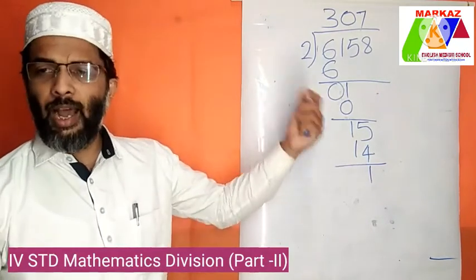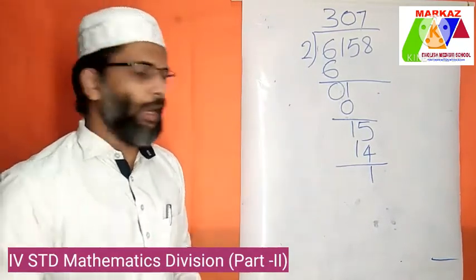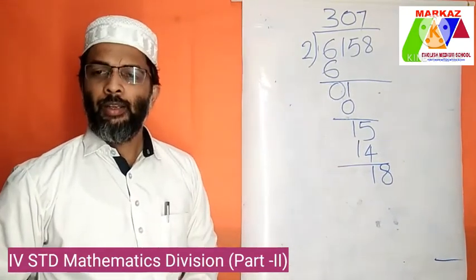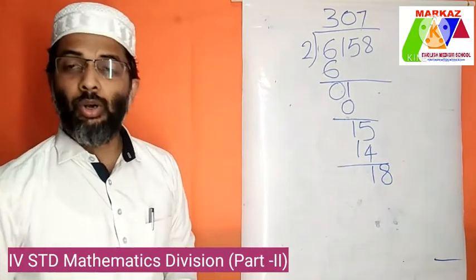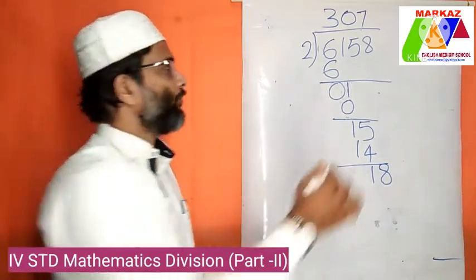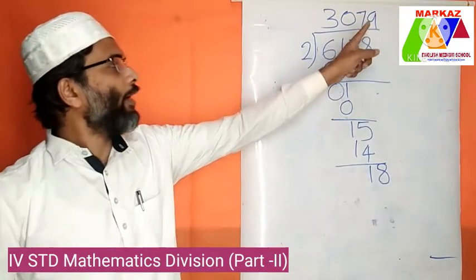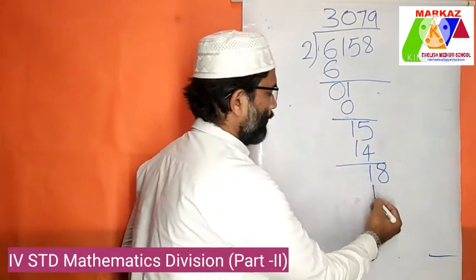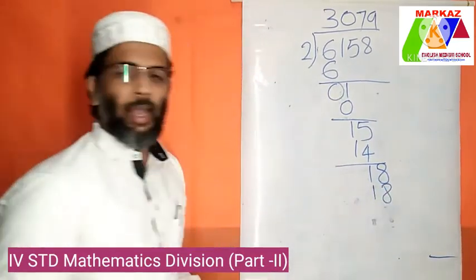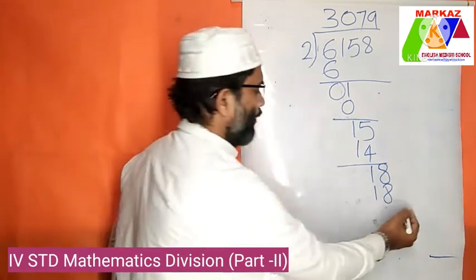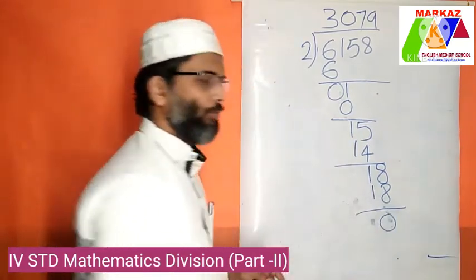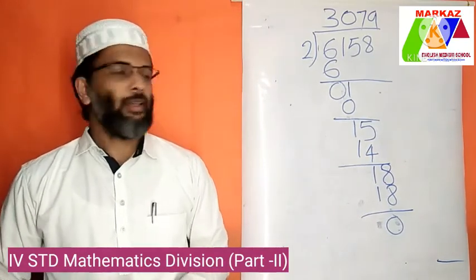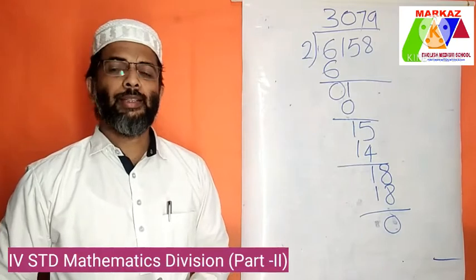Then multiply 9 into 2 — it is 18. Subtract 18 from 18 — we get 0. We have now completed all division steps. Our answer is 3079.